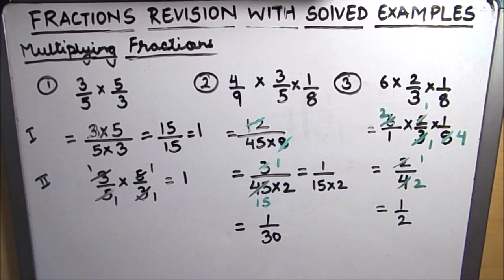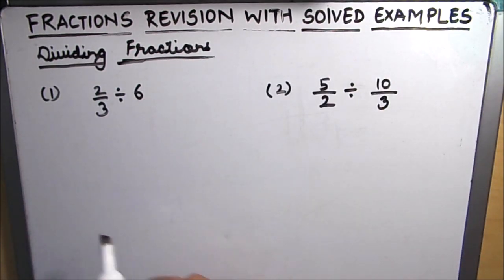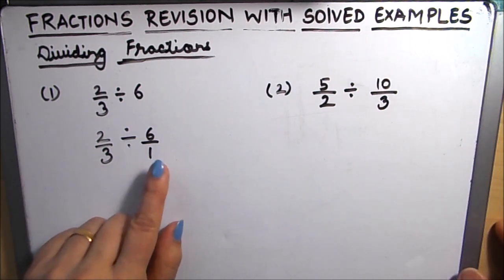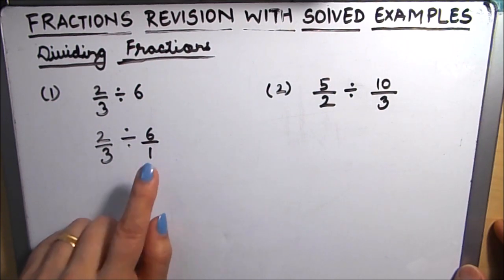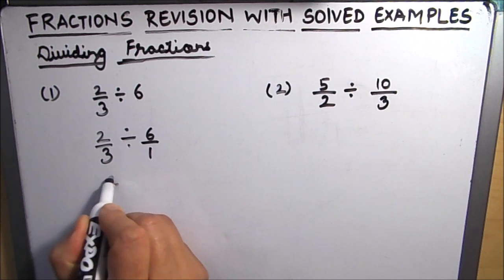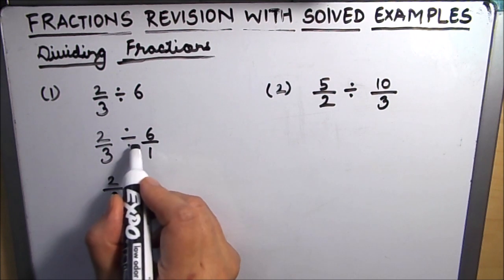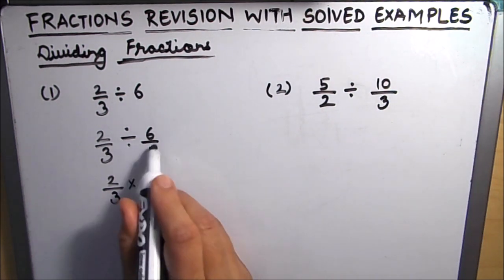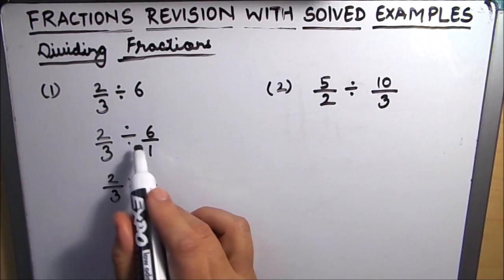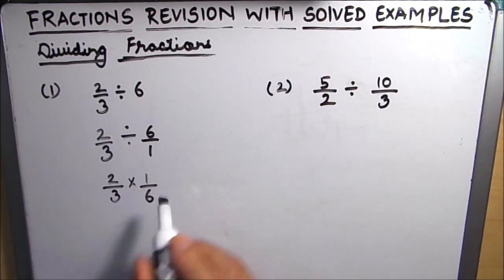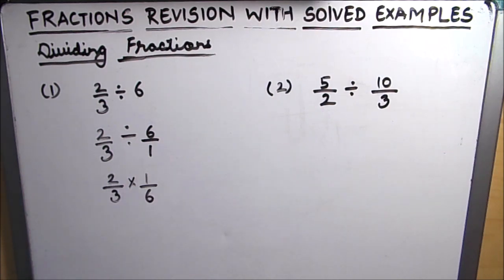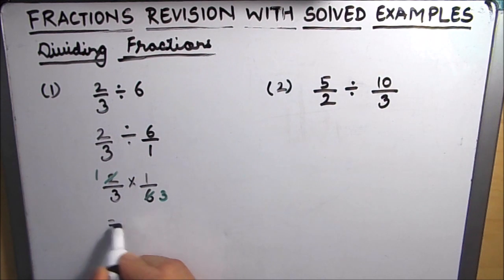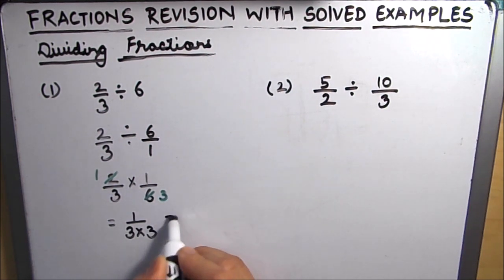Now let's move on to dividing fractions. The first example is 2 over 3 divided by 6, which can be written as 2 over 3 divided by 6 over 1. While dividing fractions, we take the reciprocal of the divisor and multiply it with the dividend. So we keep the first fraction as is, change the division sign to multiplication, and take the reciprocal of 6 over 1, which is 1 over 6. Now 2 and 6 share a common factor of 2, giving 1 over 3 times 3, which equals 1 over 9.